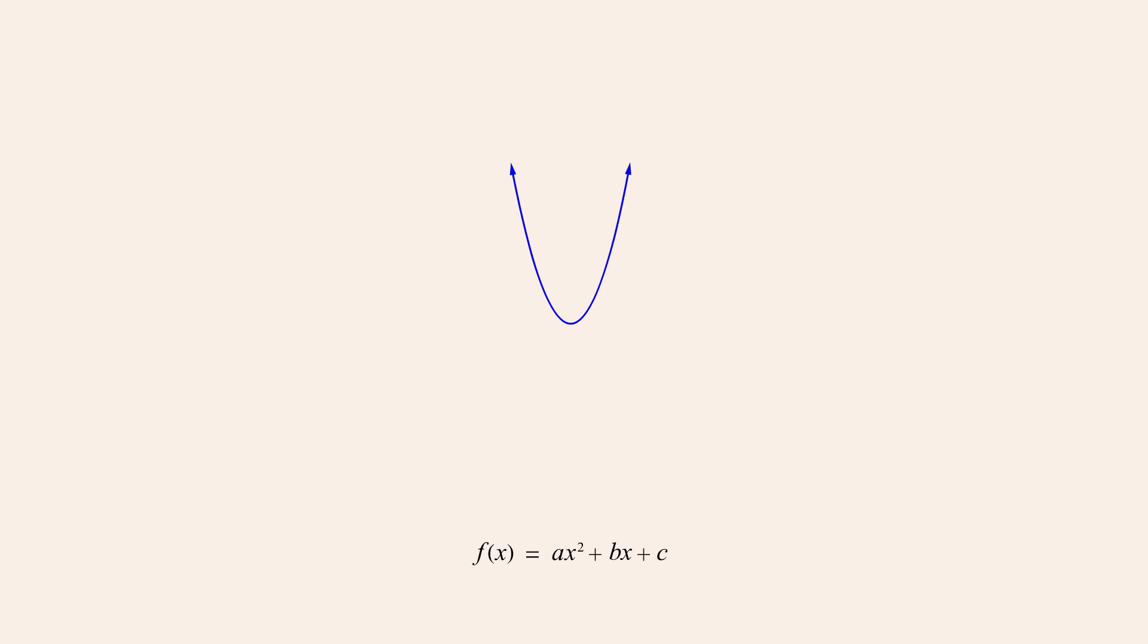And depending on the value of the constant a, the parabola may open down when a is negative or up when a is positive, and may be wider when the value of a is smaller or more narrow when a's value is larger.